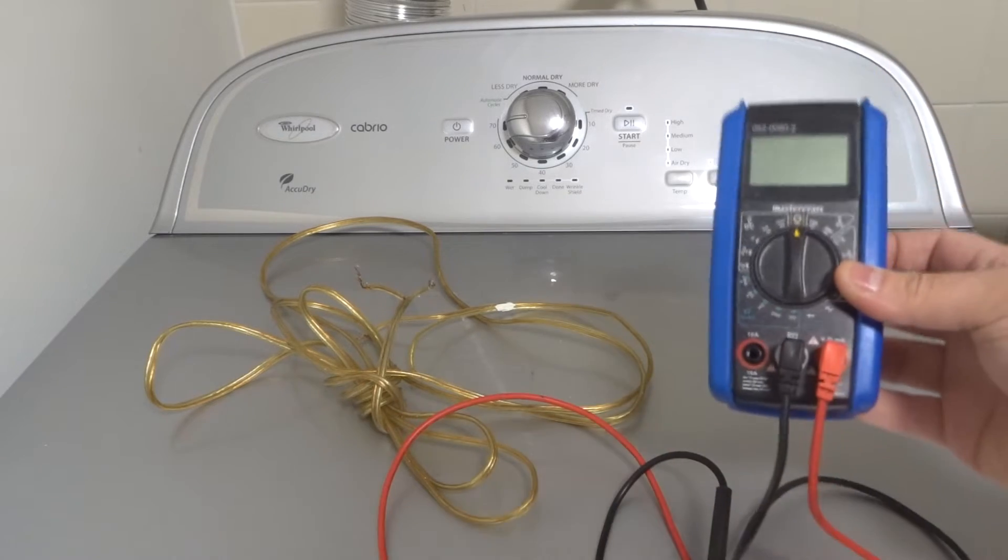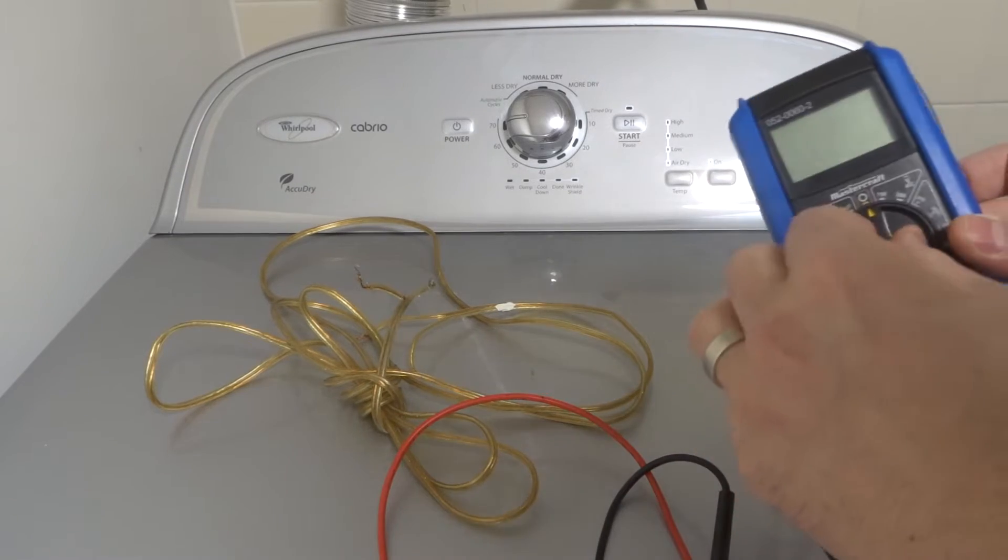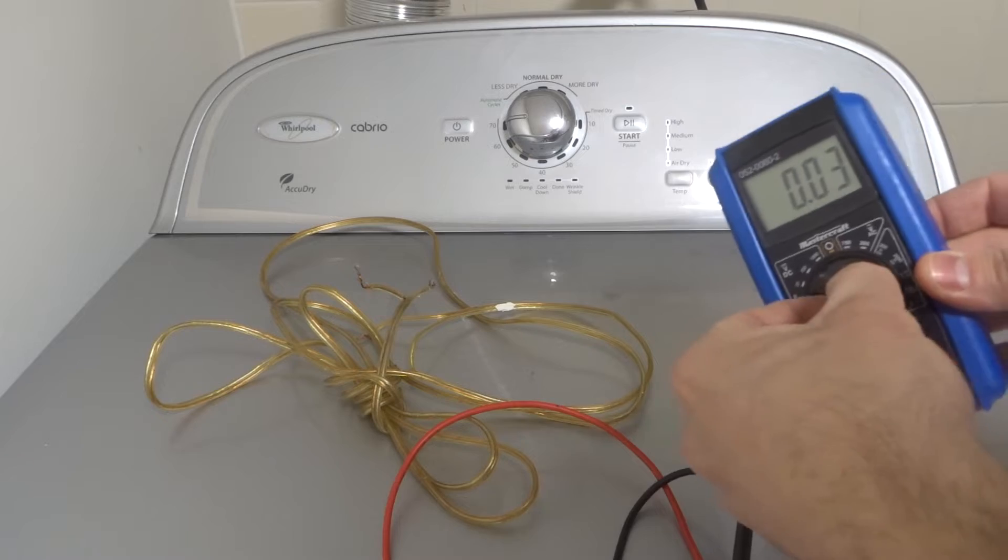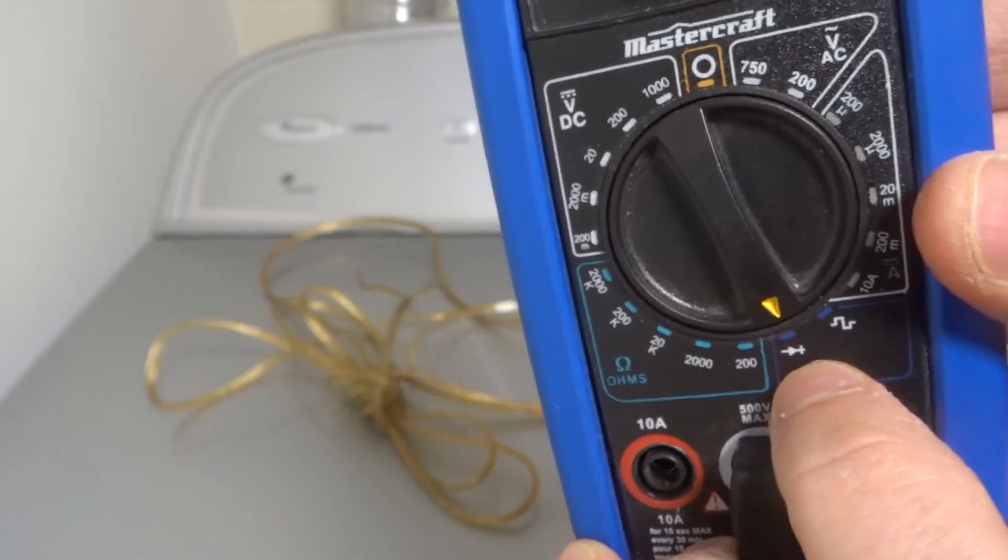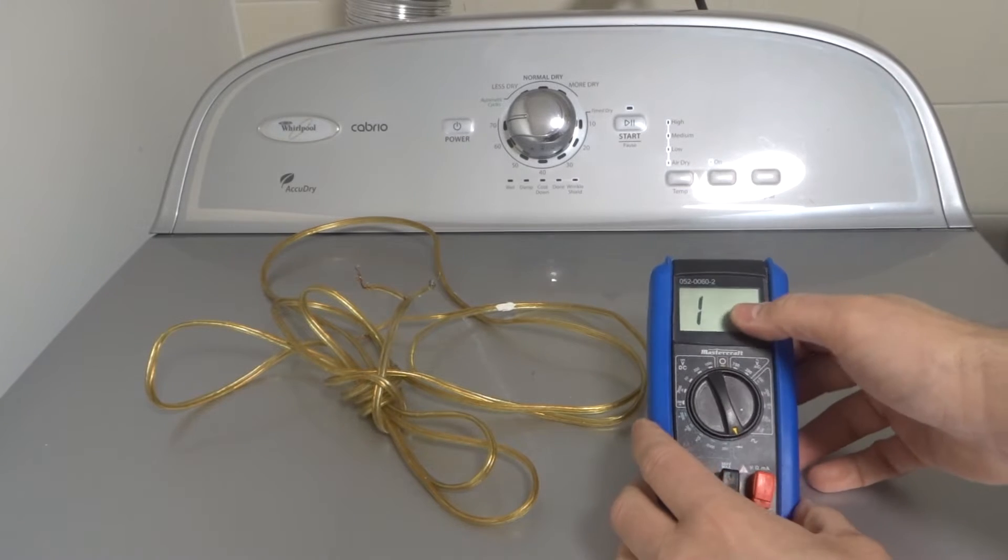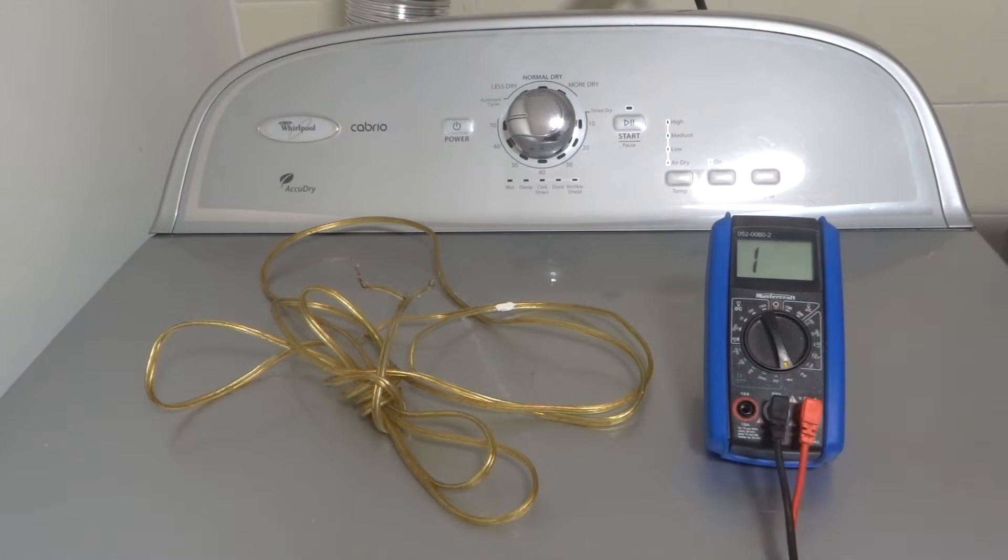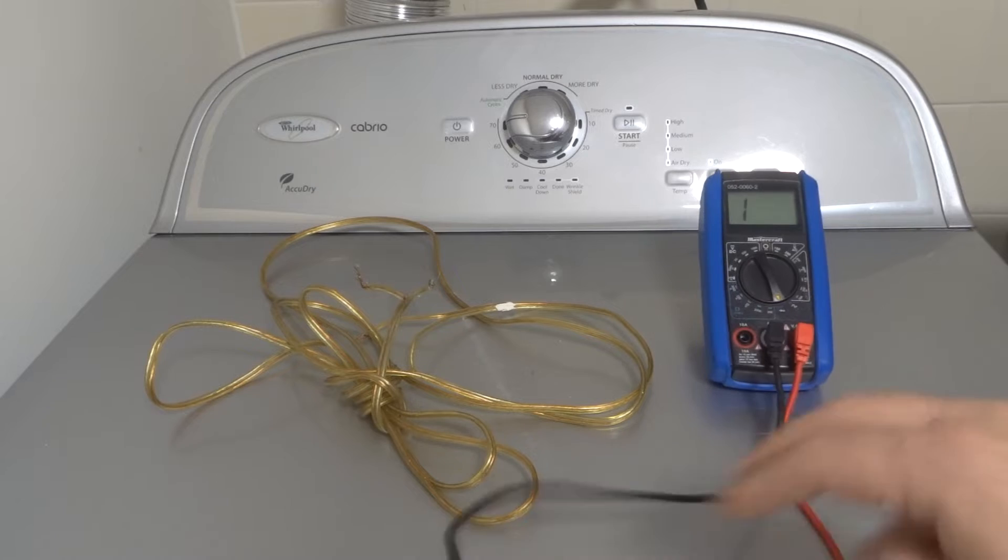And you want to turn your multimeter to the continuity setting. Now most likely your multimeter will have a continuity setting. On my multimeter, it's that symbol right there, that's the continuity setting. And you can see it says 1. Keep that in mind, it's very important, it says 1 right now. Some multimeters will also give like a sound signal when it senses continuity. This one will just change that number.